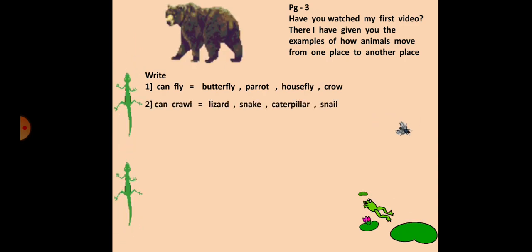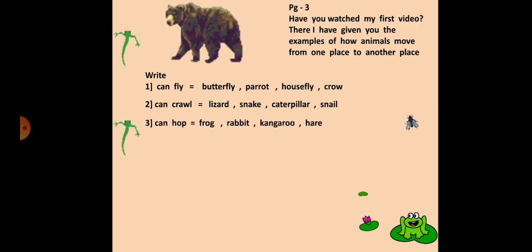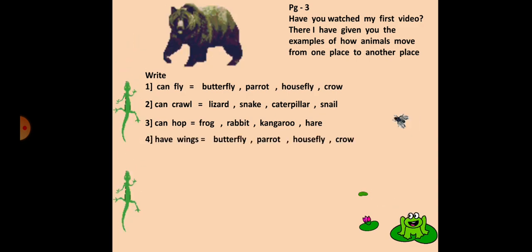Can crawl: lizard, snake, caterpillar, snail. Next one is can hop: frog, rabbit, kangaroo, hare.